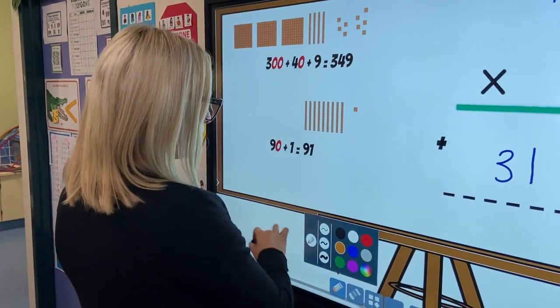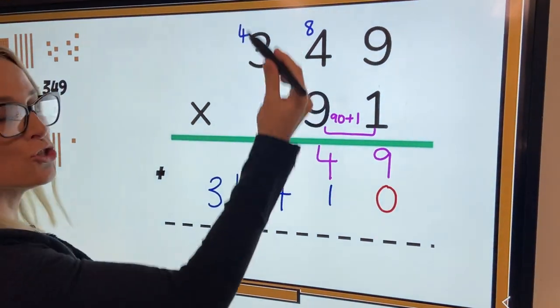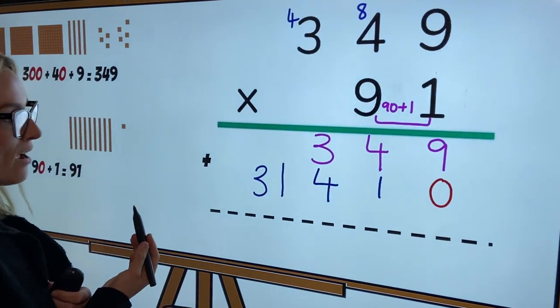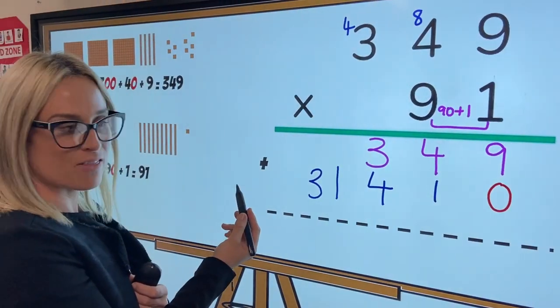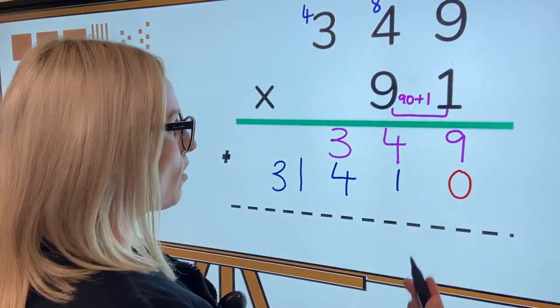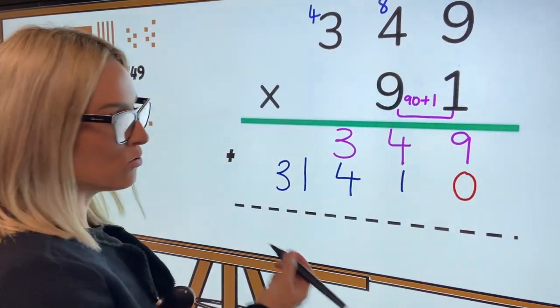Because what we have gotten to so far is we have multiplied it into two parts. For us to finalize using the written algorithm, we need to add these together. So now what we're going to do is just perform a single addition algorithm where we're just adding each place value in order.